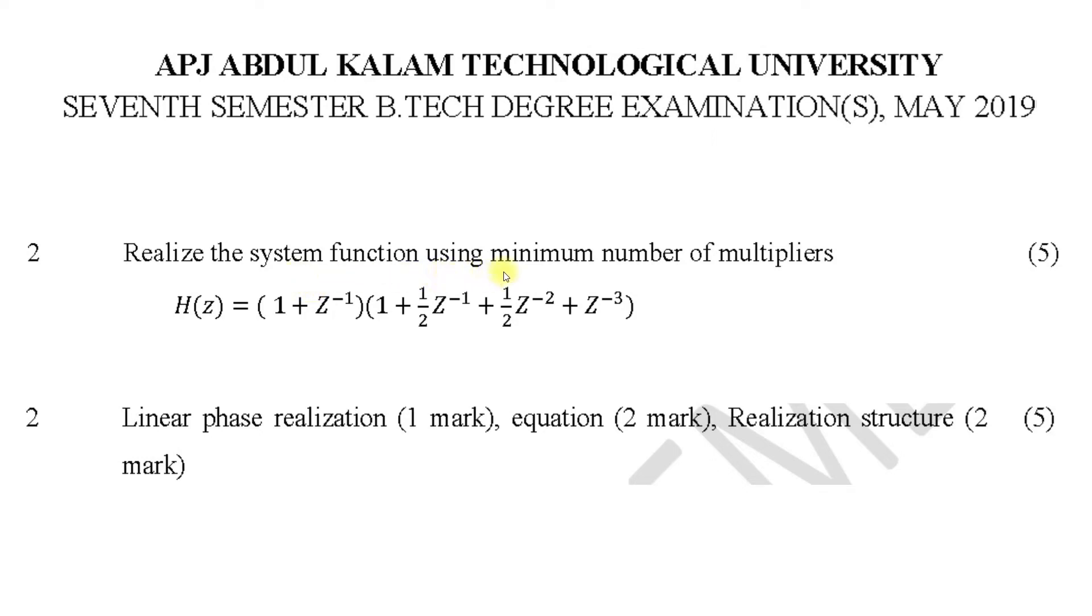Realize the system function using minimum number of multipliers. Whenever you see minimum number of multipliers, you check whether the system function is symmetric. Here we can see the first factor is 1+z^-1 which is symmetric. Again we can see this half is 1+z^-1 which is also symmetric, so it can be realized as a linear phase FIR filter.